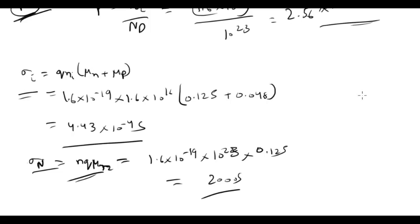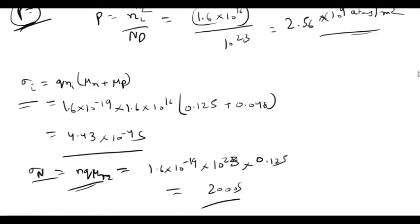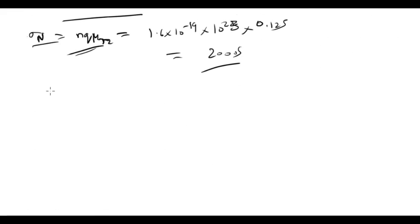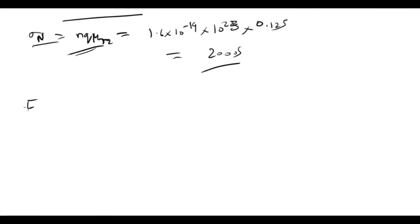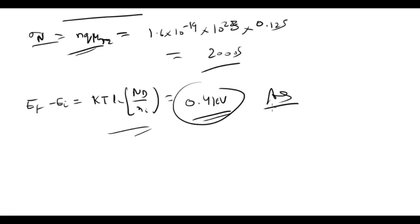The position of the Fermi level relative to the intrinsic level is given by Ef − Ei = kT · ln(Nd/ni). On calculating this, the result is 0.41 eV. This is how we calculate the Fermi level position based on semiconductor physics.